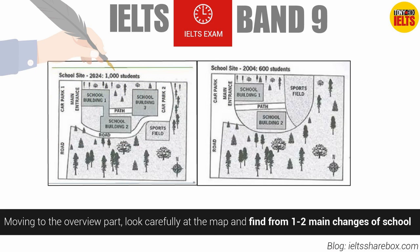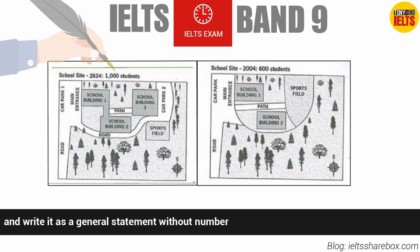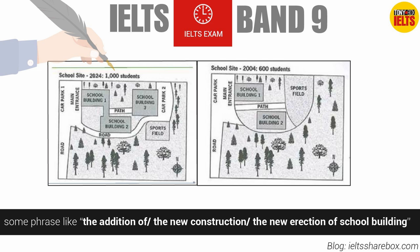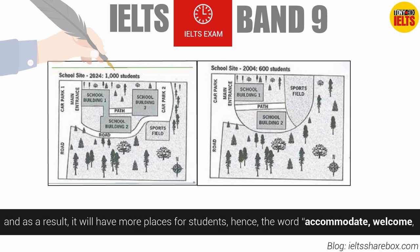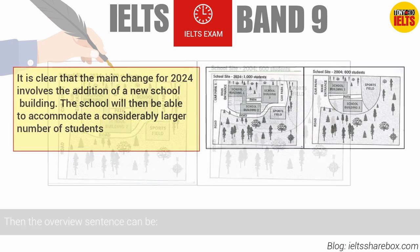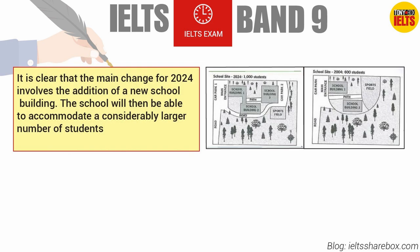Moving to the overview part, look carefully at the map and find one to two main changes of the school and write them as a general statement without numbers. The big change for this map is the new construction of a school building. We can use phrases like 'the addition of,' 'the new construction,' or 'the new erection of school building.' The words 'accommodate,' 'welcome,' and 'contain' can be used for further information. The overview sentence can be: 'It is clear that the main change for 2024 involves the addition of a new school building. The school will then be able to accommodate a considerably larger number of students.'